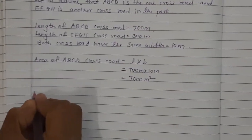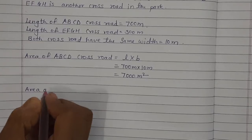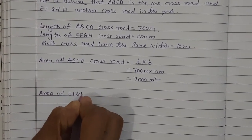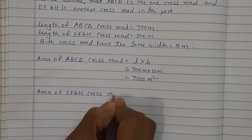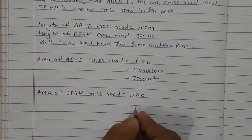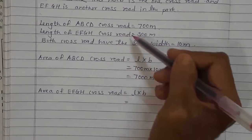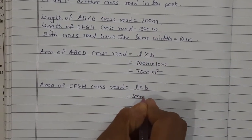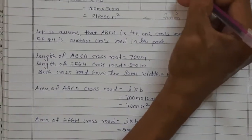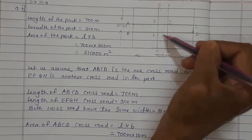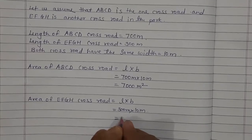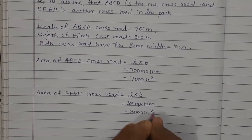Now let's find the area of EFGH cross road. Formula: length multiplied by breadth. Length of EFGH cross road is 300 meter. Width is 10 meter. So area is 300 into 10 = 3,000 meter square.